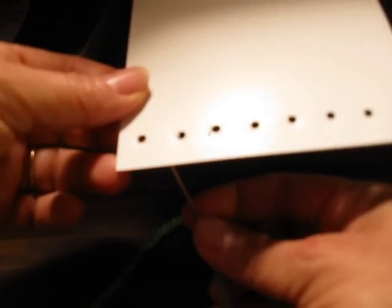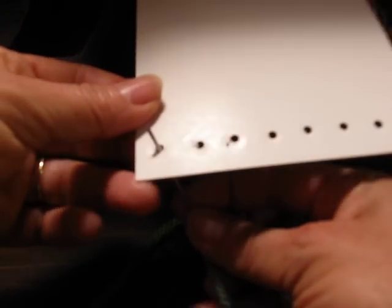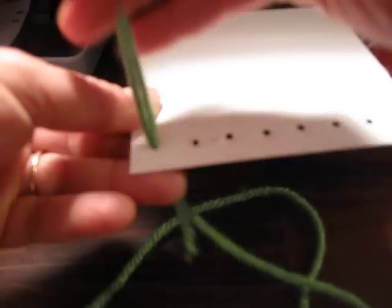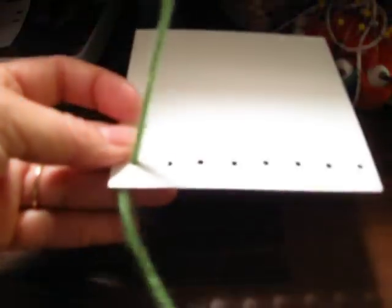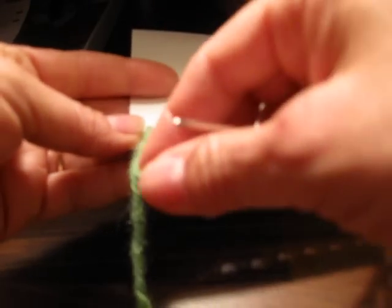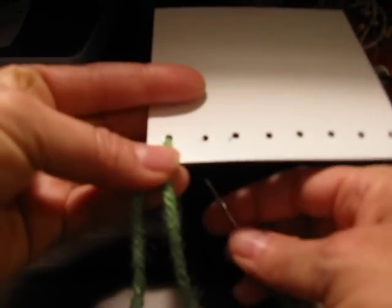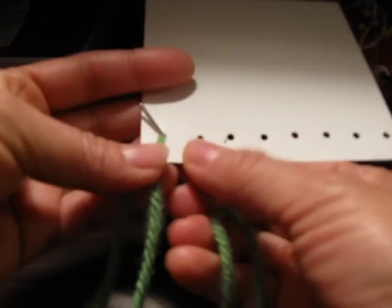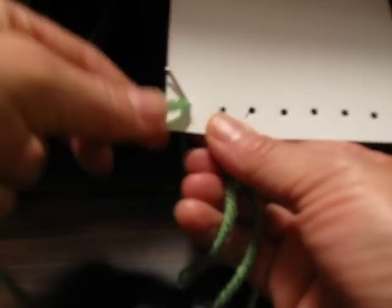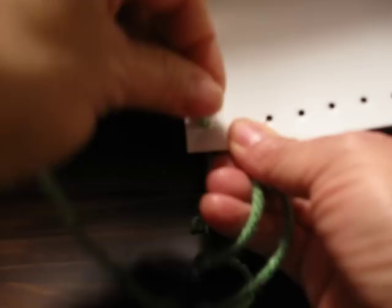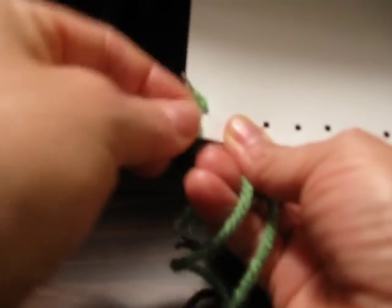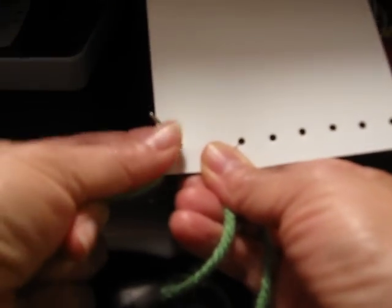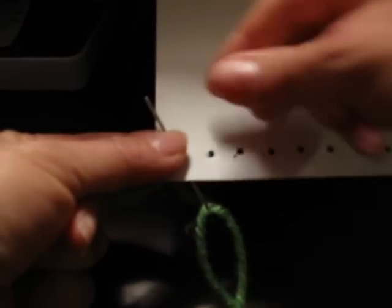To begin, insert your needle from the bottom to the top, then you're going to go in again through the same hole. But this time, wrap your yarn twice around the needle. This will anchor your first stitch to the cardstock.